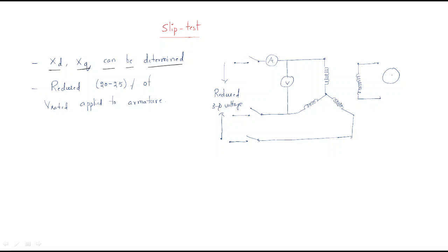In the slip test, this is the armature of the synchronous machine and this is the rotor. The rotor is connected such that flux will be transferred. We apply 20 to 25 percent of the rated voltage directly to the armature.